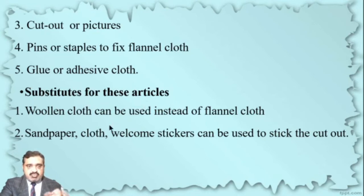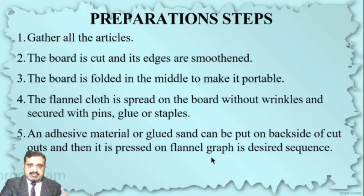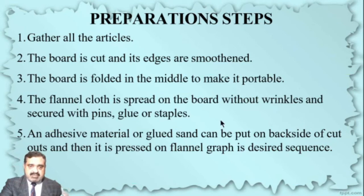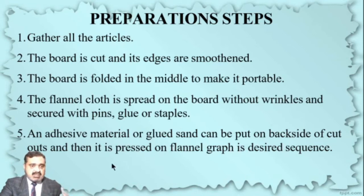Substitutes for these articles: woolen cloth can be used instead of flannel cloth, or sandpaper cloth, and velcro stickers can be used to stick the cut-outs. Preparation steps: first, gather all the articles. Then the board is cut and its edges are smoothed. Then the board is folded in the middle to make it portable. Then flannel cloth is spread on the board without wrinkles and fixed with pins, glues, and staples. An adhesive material or glued shell is put on the back sides of the cut-outs, and then it is placed on the flannel cloth in the desired sequence.